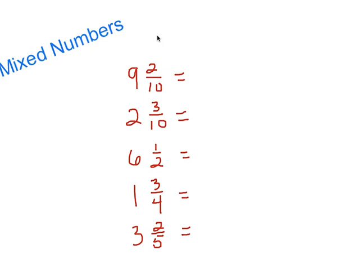Hopefully you've pressed pause — now you're back and let's check how you did. Nine and two-tenths is nine point two. Next, two and three-tenths: whole number two, three in the tenths place — two point three, or two and three-tenths.